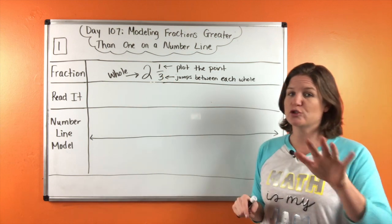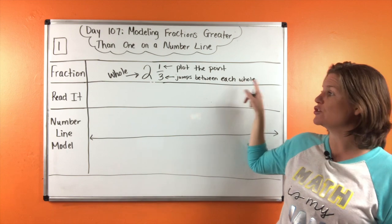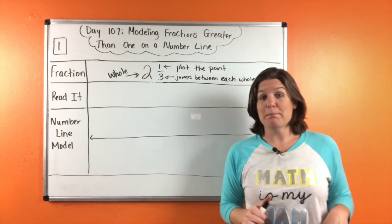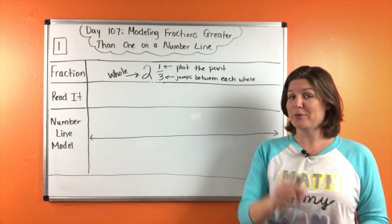Now the three is where students tend to get a little tripped up. The three represents the jumps between each hole. Okay, go ahead and press pause to record these notes on your paper and press play when you're ready to continue.